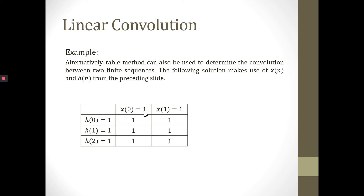For X0 it is equal to 1, and for X1 it is equal to 1. In the middle, we multiply or convolute the signal Hn and Xn for each column and each row. H0 multiplied with X0: 1 multiplied with 1 equals 1; 1 multiplied with 1 equals 1. Same for the next row: 1 multiplied with 1 equals 1; 1 multiplied with 1 equals 1. Same for H2 and X0: 1 multiplied with 1 produces 1; 1 multiplied with 1 produces 1.